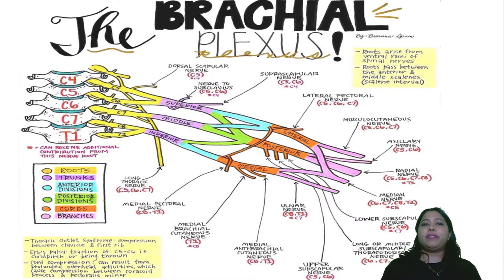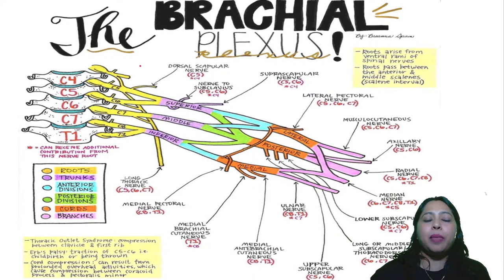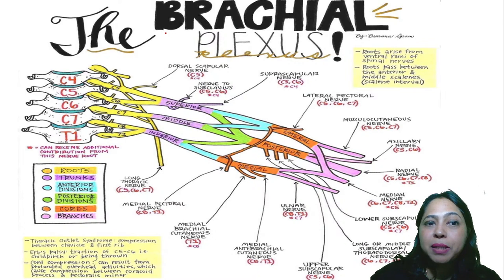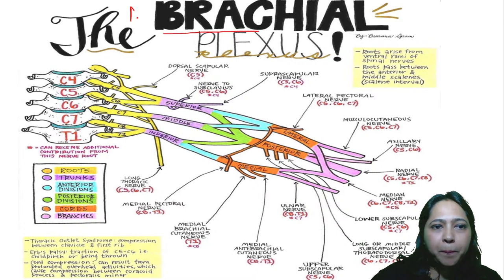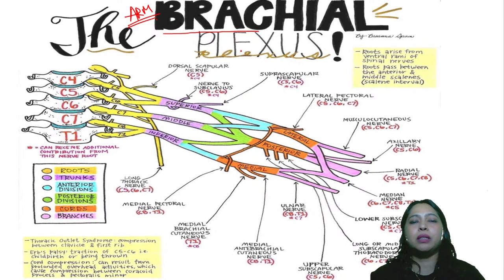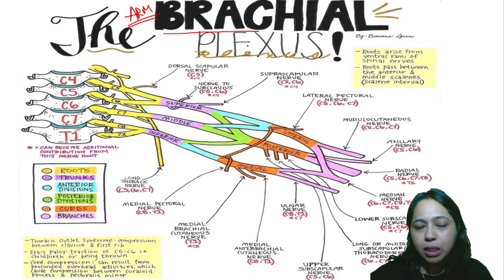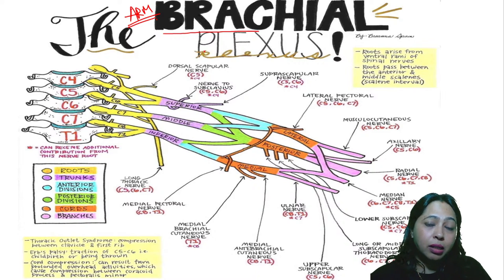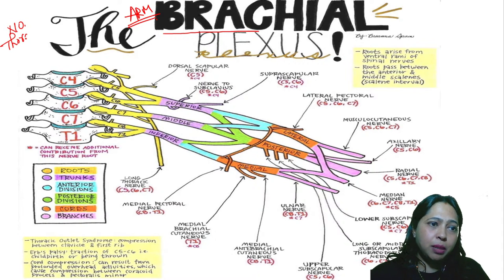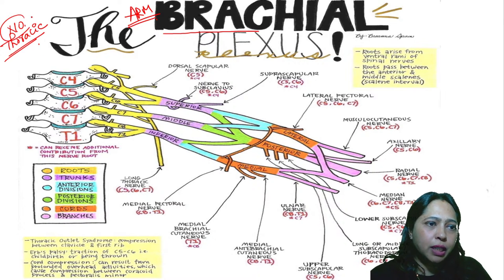The name itself indicates — 'brachial' means arm. Plexus formation occurs in the cervical region, brachial region, lumbar region, and sacral region. There is no plexus formation in the thoracic region — keep this in mind, there is no thoracic plexus.